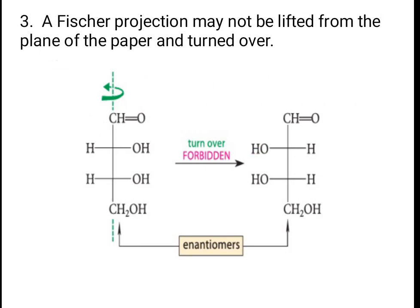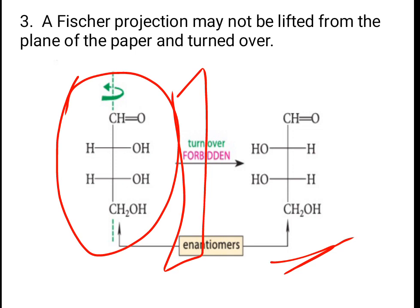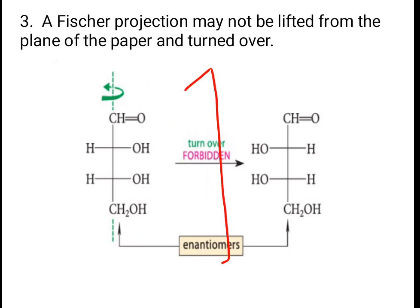A Fisher projection may not be lifted from the plane of the paper and turned over. This is forbidden. If you take it from the plane of the paper and turn it 180 degrees, you will get an enantiomer — a mirror image of the original structure.